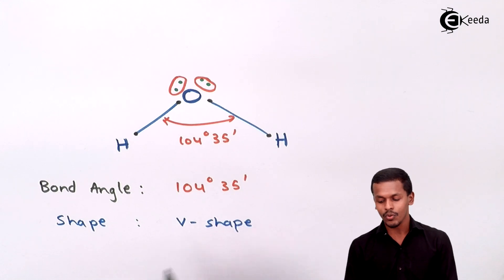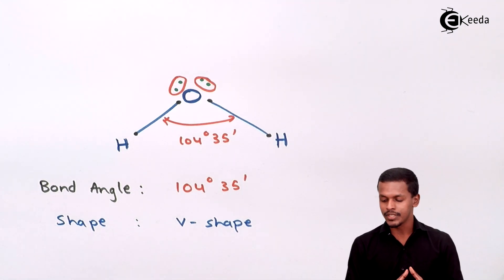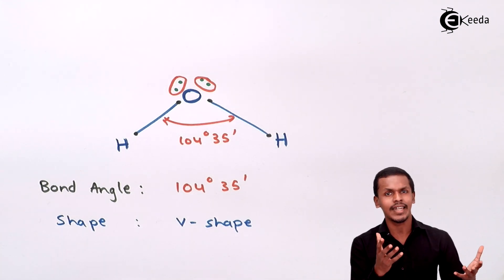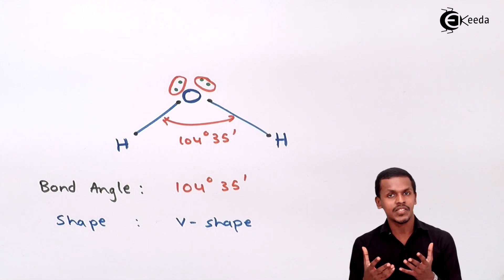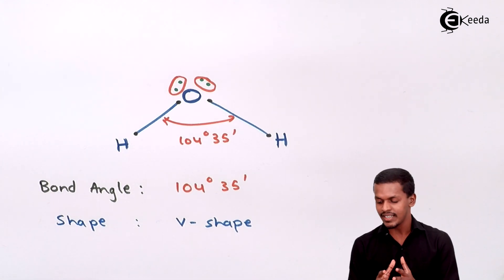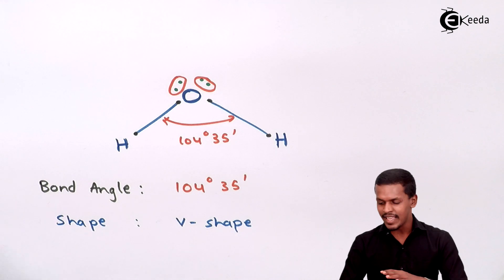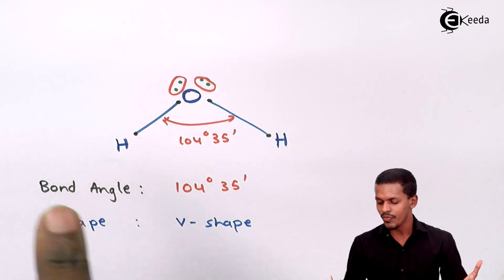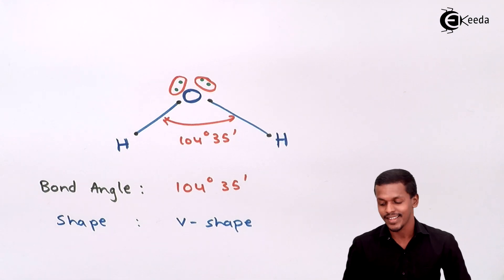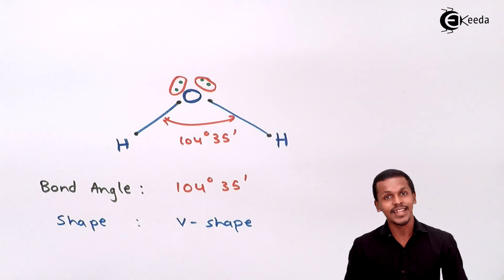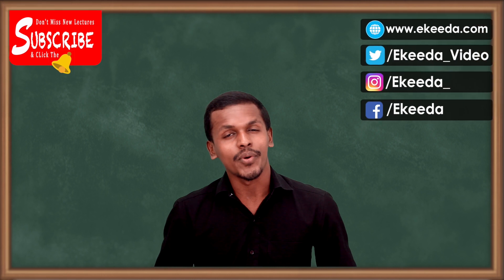In hybridization we found the geometry of water to be tetrahedral, but when we apply VSEPR theory, we get a V-shape, and the molecule is present in a plane. VSEPR theory gives very good detail about the bond angles and explains why the bond angle is reduced from the expected value. All these details are explained by the VSEPR theory.